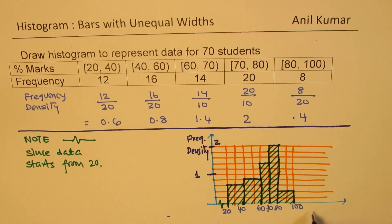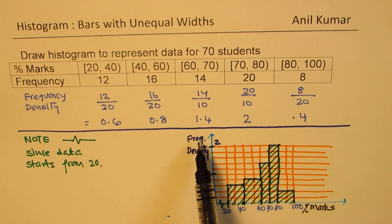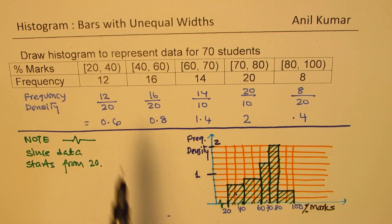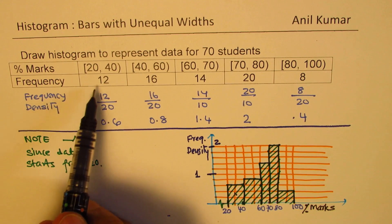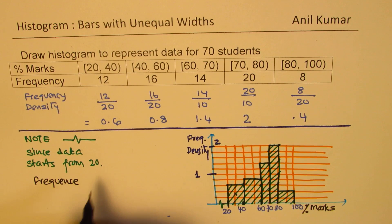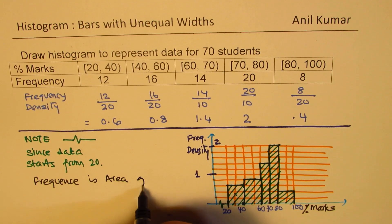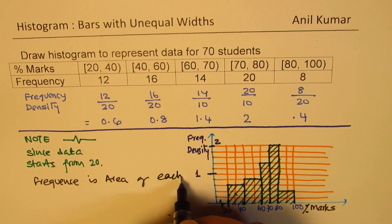On this side, we have marks or percentage marks. On this side, we have frequency density. Each area gives you the frequency, which is 12. Note: frequency equals the area of each bar.